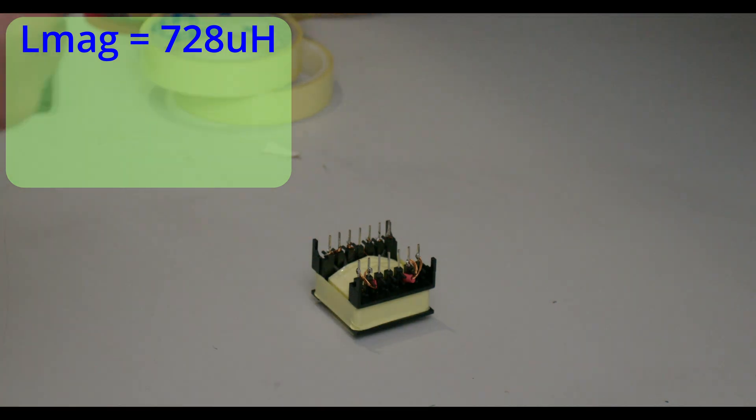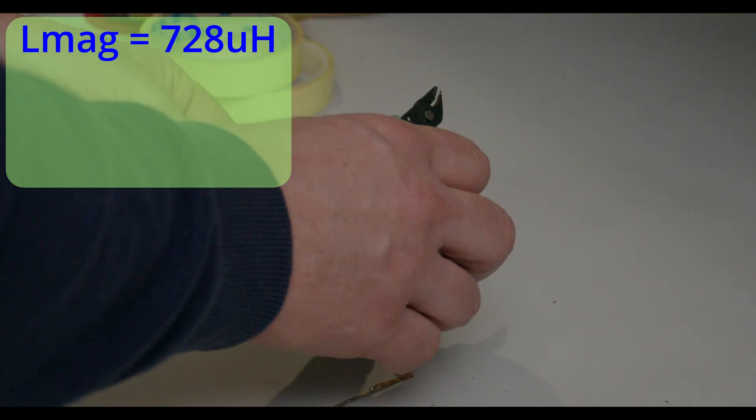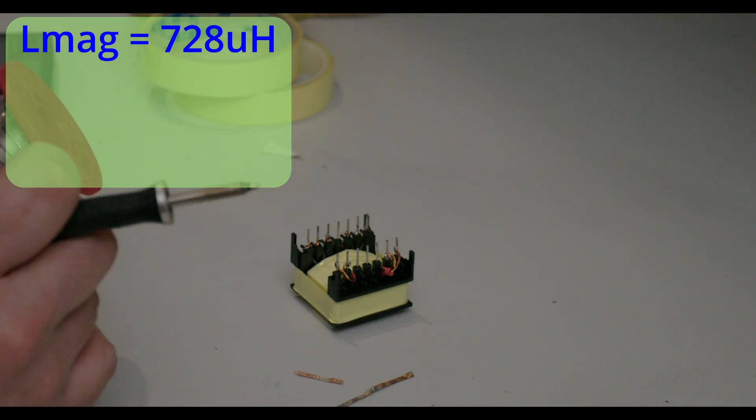We have already measured the primary magnetising inductance at 728 microhenries, which is in spec. This is just the inductance of the primary winding with all other windings open circuit.